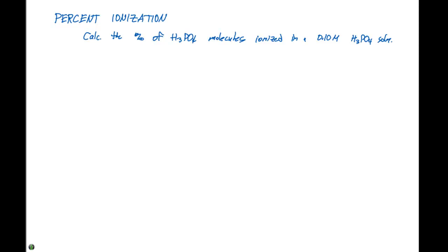Calculate the percent of H3PO4 molecules ionized in a 0.10 molar H3PO4 solution. We need to take the concentration of ionized molecules divided by the original concentration and multiply that by 100%.